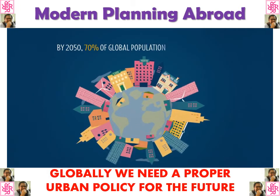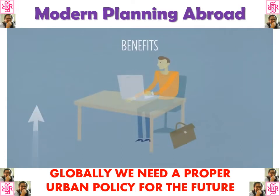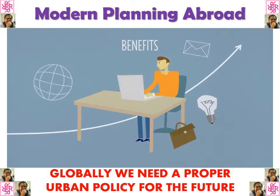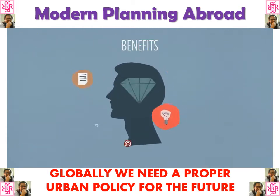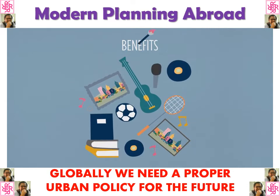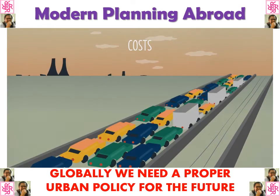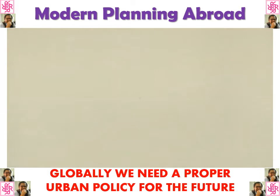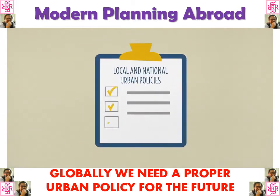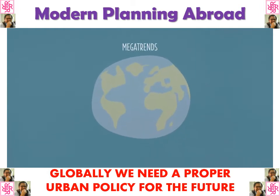By the year 2050, 70% of the global population is expected to live in cities. In an increasingly urbanized world, cities can bring major benefits — boosting productivity, innovation, job creation, higher wages, and culture and leisure amenities. But if not managed properly, cities can also generate costs such as traffic congestion, long commuting times, air pollution, unaffordable housing, and inequalities. Successful cities do not happen automatically; they require effective local and national urban policies. Globalization, digitalization, aging population, migration, and climate change are profoundly transforming the way people live and work in cities.